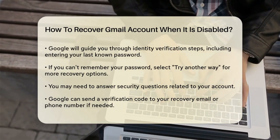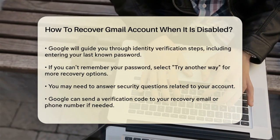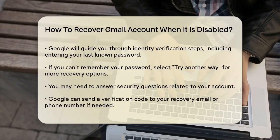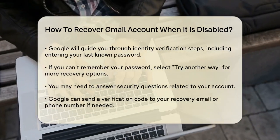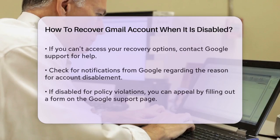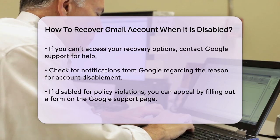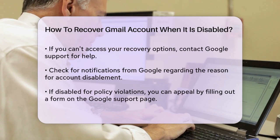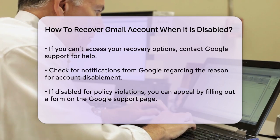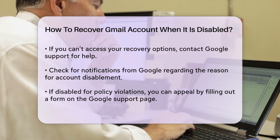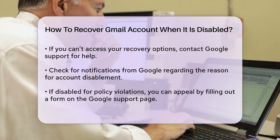Checking Google's disabled account notification: If your account was disabled due to policy violations or suspicious activity, you'll receive a notification explaining the reason. You can appeal this decision by clicking the link provided in the message and filling out the appeal form on the Google Support page for disabled accounts. Be honest and explain why you believe your account should be reinstated.